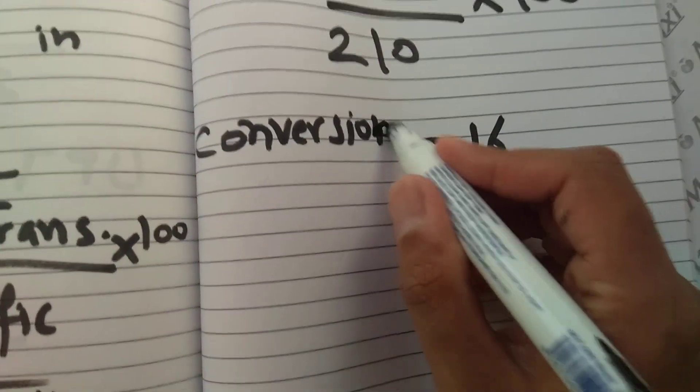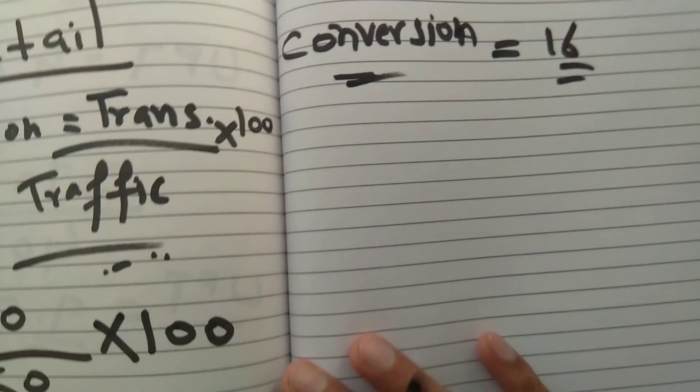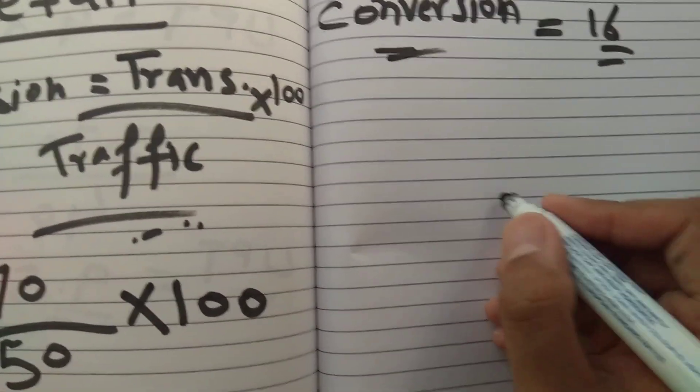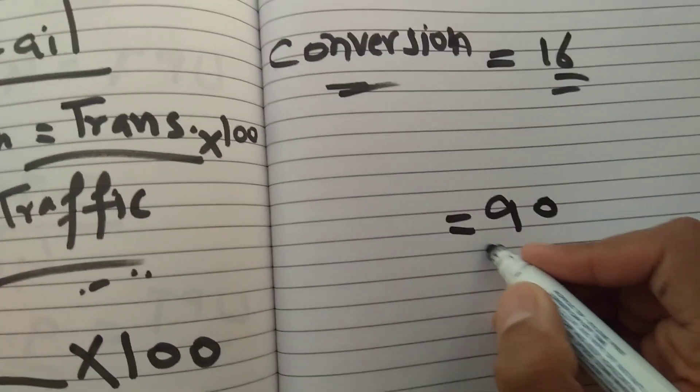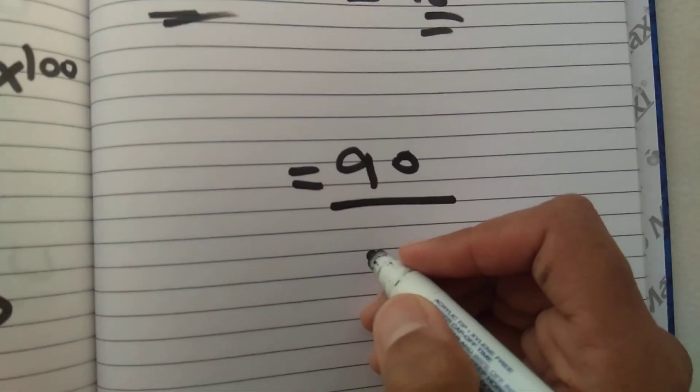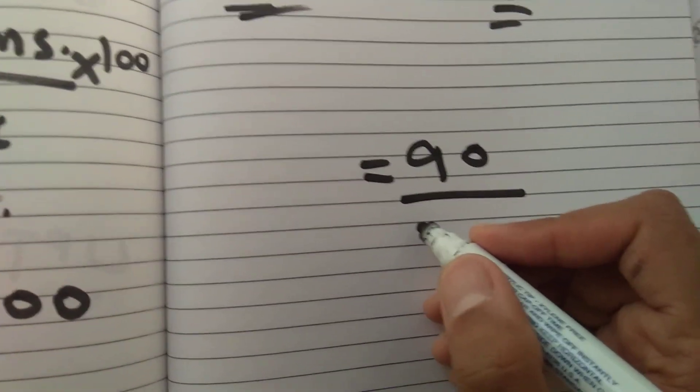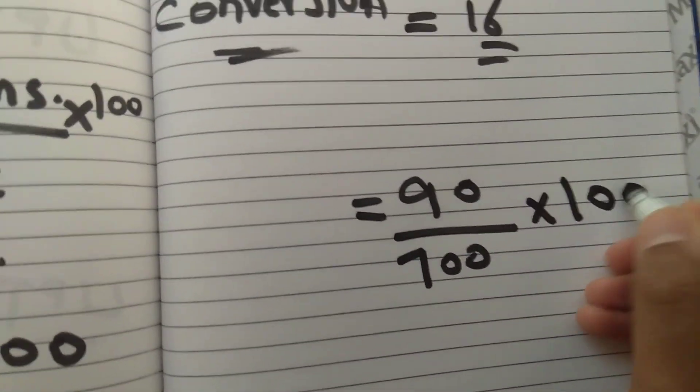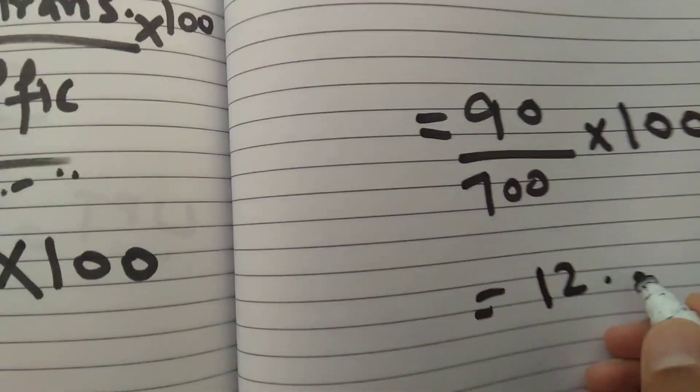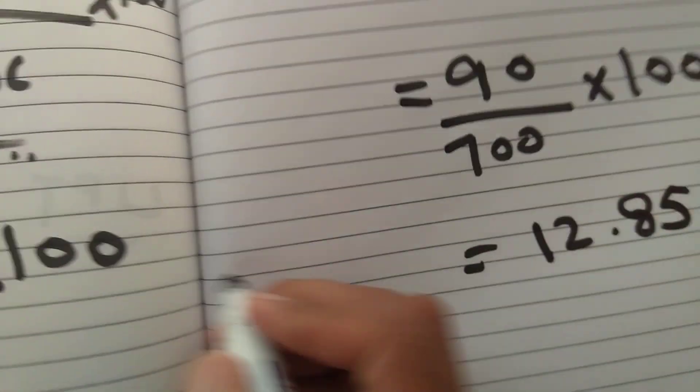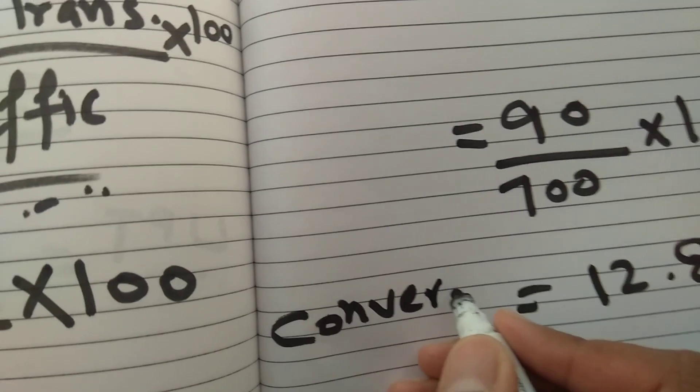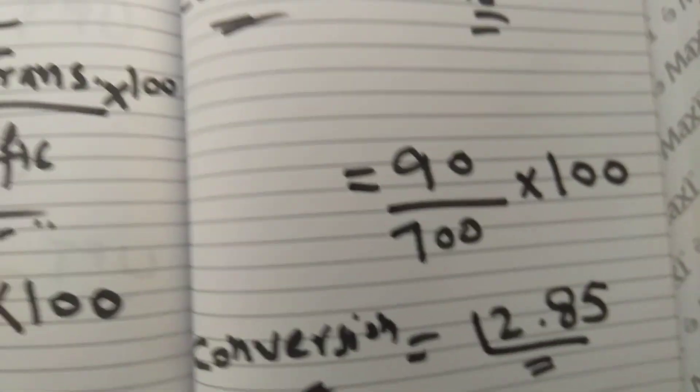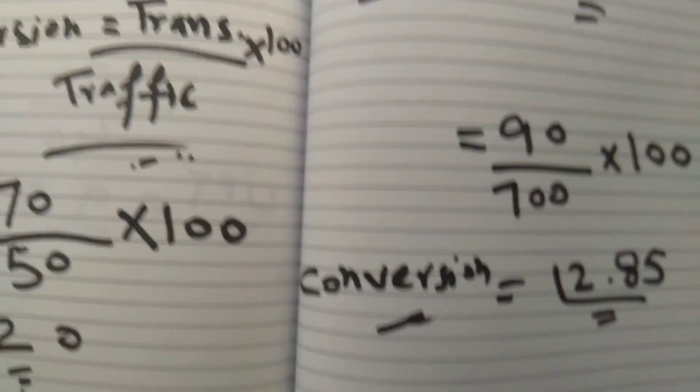One more example to make it clear for you. Let's say this time we have a little bigger value - you have 90 transactions and the number of people or traffic is 700. Then you have to multiply it with 100. So the answer will be 12.85. The conversion for that day is 12.85.